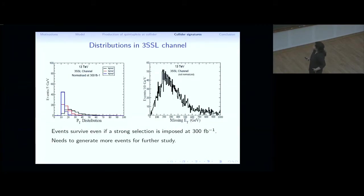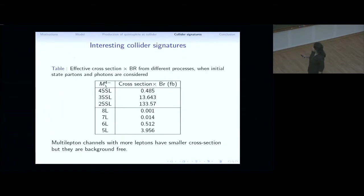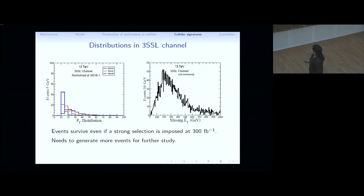Next, when we moved on to three same sign lepton channels and we tried to plot the PT distribution in order to get significant number of events, we have to move to 300 femtobarn inverse. Because again, as I have shown here, the cross section, if you move from two same sign lepton to three same sign lepton, it decreased a lot. That's why we needed higher luminosity here. But again, we need to generate more events to study all these plots. And you can see even survives even if a strong selection is imposed on this momentum. Similarly, we have studied four same sign lepton channels, but I have not shown it here because it requires more than 1000 femtobarn inverse luminosity to give you some such events.